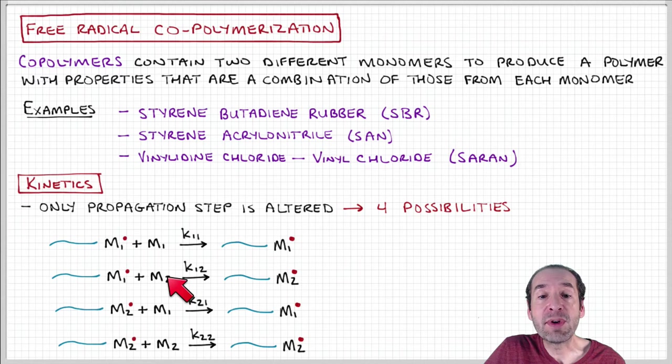Now we have the same growing chain, but the monomer unit that's active at the end that contains the active site is monomer two. We can think of the same things happening in chains that initially have the active site on monomer two at the end of the chain.